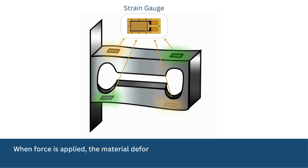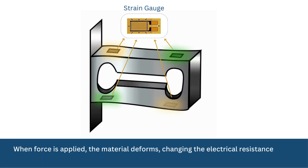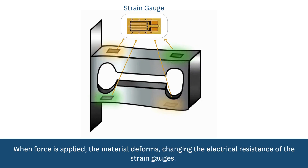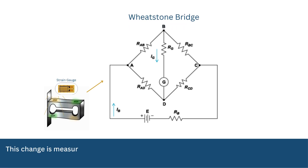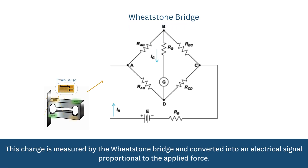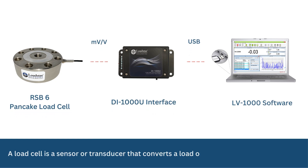When force is applied, the material deforms, changing the electrical resistance of the strain gauges. This change is measured by the Wheatstone bridge and converted into an electrical signal proportional to the applied force.